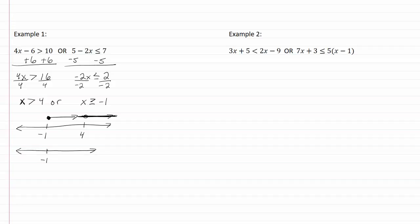Here's our negative one and we're going to go from negative one to positive infinity. Notice there is no four on the graph.